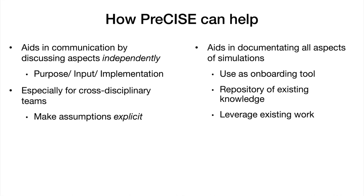It does this in two ways. Basically, PRECISE aids in documenting all aspects of simulations. It separates the purpose, the input, and the implementation of the simulation. It's especially designed for cross-disciplinary teams and makes assumptions about your system explicit. Because it's a documentation of all aspects of a simulation, you can use it as an onboarding tool — give someone a description in the PRECISE framework and they'll understand exactly what the simulation is doing. You can also build a repository of existing knowledge and leverage prior work.